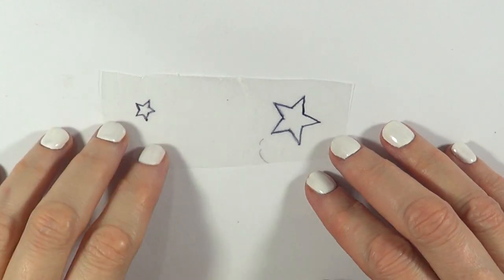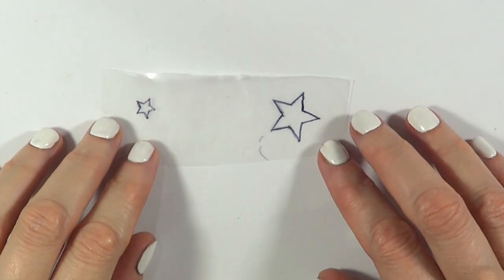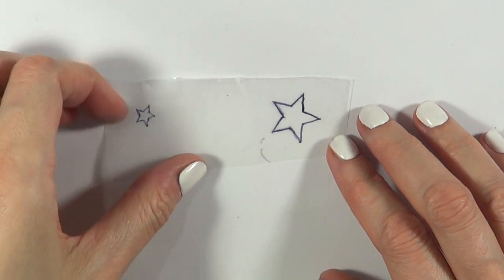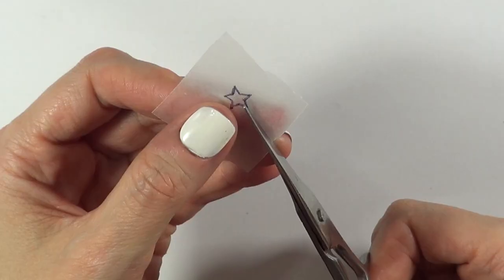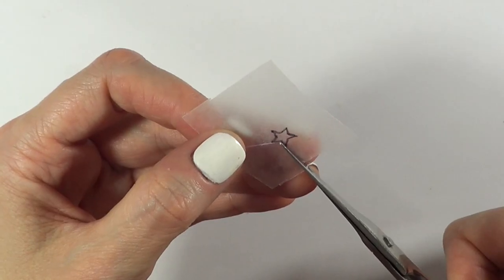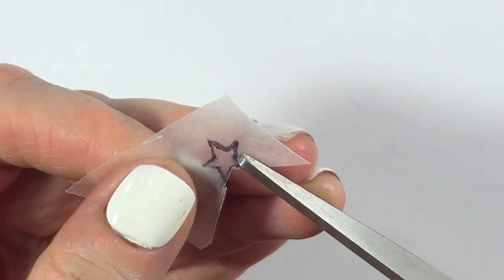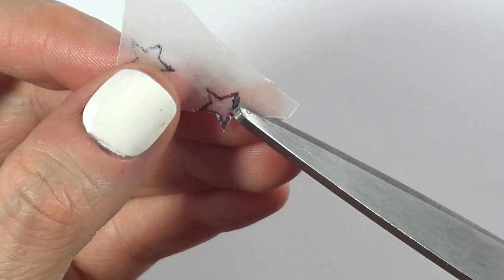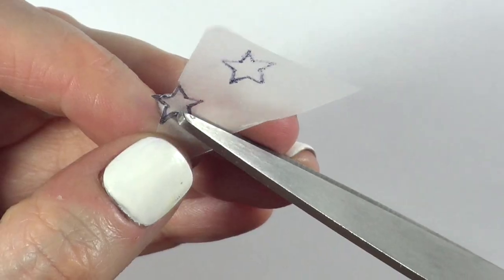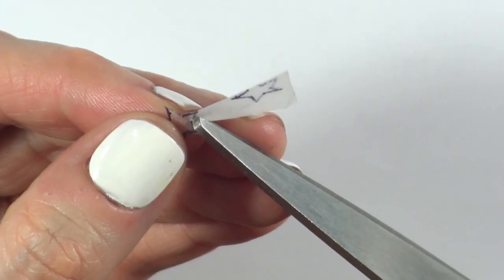The first thing I'm going to be doing is working with some star templates. I drew a couple of stars and the pictures of these ones are going to be on my blog if you want to follow these exact shapes. I drew them over some wax paper and I'm just going to be working with a small size and a bigger size.